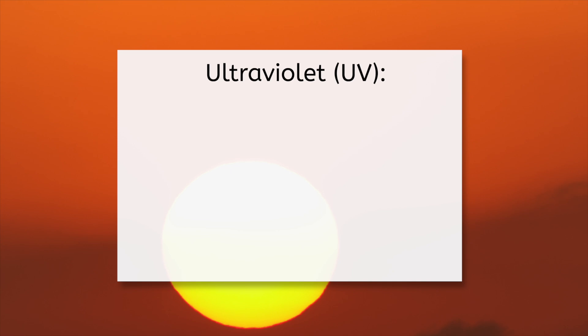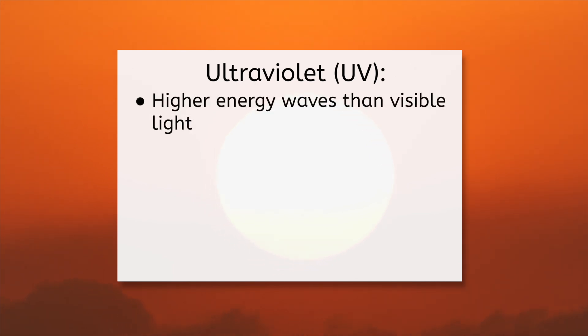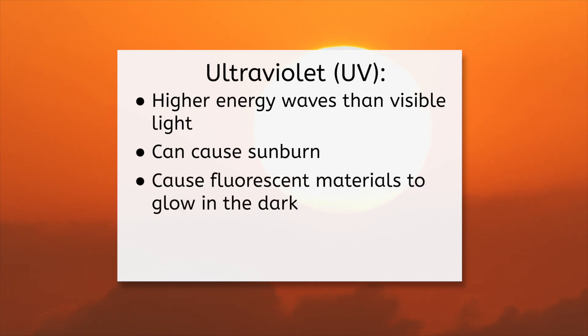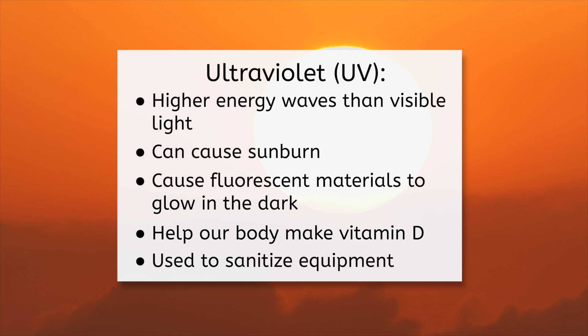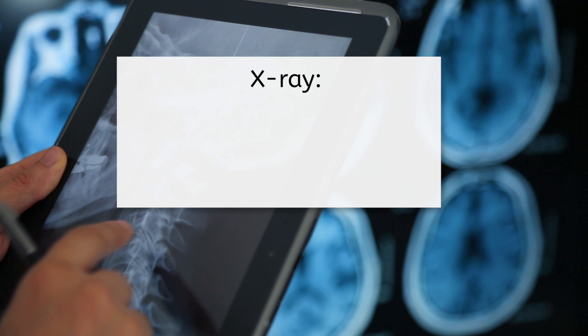Cranking up the energy, we meet ultraviolet rays, often called UV rays. The sun sends out these high energy waves, which are invisible to us, but are what give you a tan or a sunburn if you're not careful. They're also the reason fluorescent materials glow in the dark when they're under a black light. Despite their bad rap for causing skin damage, they help our bodies make vitamin D, essential for healthy bones. And they can be used to sanitize equipment, because UV rays will kill most bacteria and viruses.